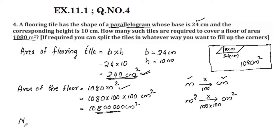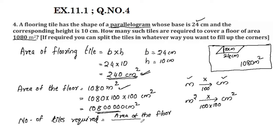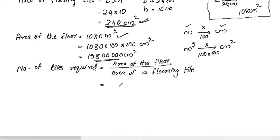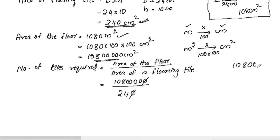The number of tiles required is equal to the area of the floor divided by the area of one flooring tile. The area of the floor is 1,08,00,000 cm² divided by the area of one floor tile, which is 240 cm².